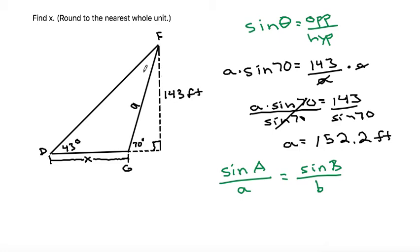So if we knew this angle, we could plug in. We can plug in so far, we know the 43 and the A, so that would be sine of 43 degrees divided by this was our A answer, was the 152.2.